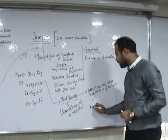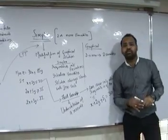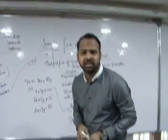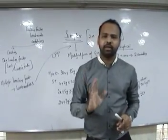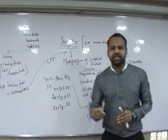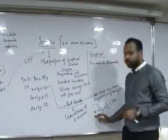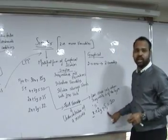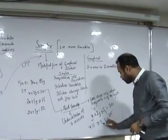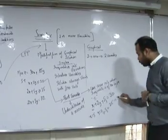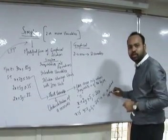When I convert the first constraint, I will write x + 2y + s1 = 30, where s1 stands for the slack of the first resource. Slack is the underutilization of that particular resource. So if I am producing 0 of x and 0 of y, the first resource is underutilized by 30 units. If you produce 5 units of x and y is 0, then s1 will be 25, indicating that 25 units of the first resource are unutilized capacity.